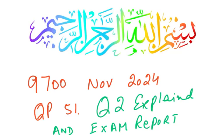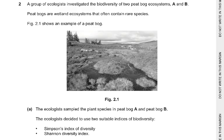Bismillahirrahmanirrahim. Question 2, Paper 519700, November 2024. The main skill in doing a Paper 5 is reading the question very, very carefully.